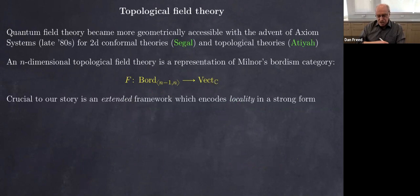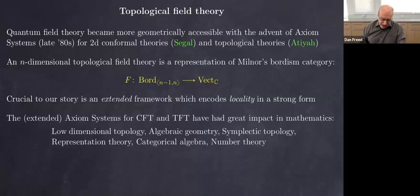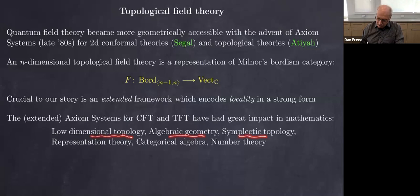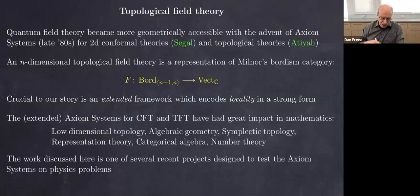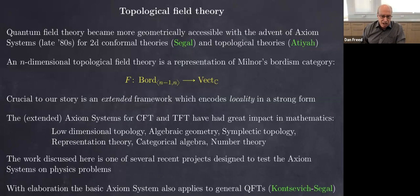There's an extension of these axioms where we go down from (n−1)-manifolds to (n−2), (n−3), and so on — that's the extended axiom system, a very important ingredient in the story. This kind of axiom system has been very impactful in mathematics — in knot invariants, mirror symmetry, invariants in symplectic geometry, geometric Langlands, and so on. The project I'll discuss is one of several recent projects looking back at physics and seeing what we've learned in mathematics can say directly about problems in physics.